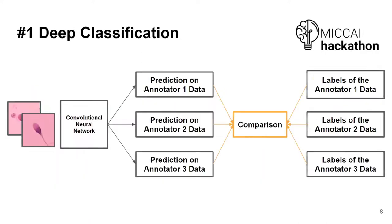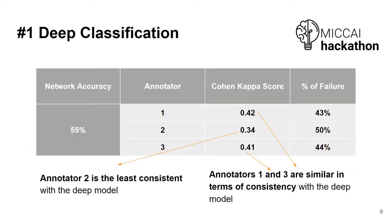In this work, we are focused on developing this consistency model. As a first approach, we developed a standard deep classification network trained on the whole dataset. With this approach, we concluded that the second annotator is the least consistent with the deep learning model.